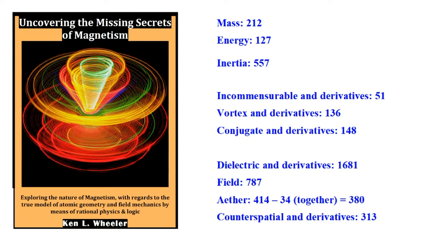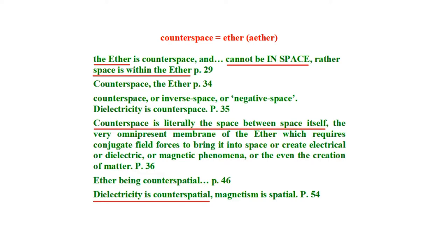Those are the words you have to look up. The first word I look up is 'counter-spatial.' As you can see here, he says the ether cannot be in space — space is within the ether. He goes through here but never defines it. By the time I got to page 54, I finally gave up. But it's important to see what he's saying. Let's see if I can illustrate what Ken Wheeler is saying and get to the bottom of this.